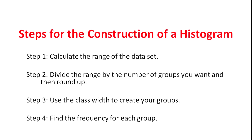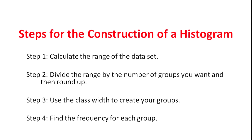Secondly, divide the range by the number of groups you want, and then round up. The groups will be in the shape of class intervals. In the third step, use the class width to create your groups. Suppose you are taking a class interval of length 10, then the values falling in that class interval form that group. In the fourth step, count the number of values lying in each class interval — that indicates the frequency of each group.